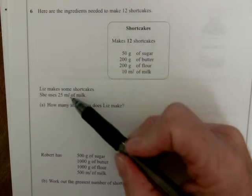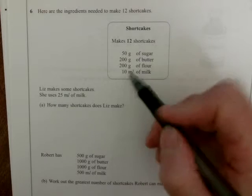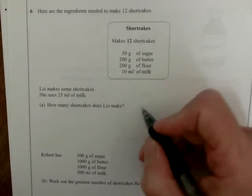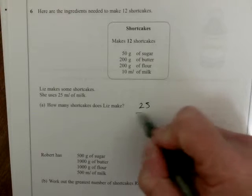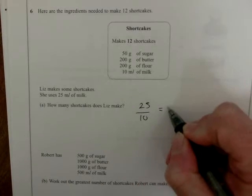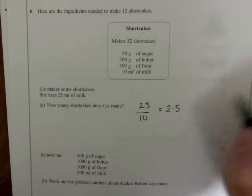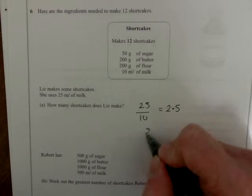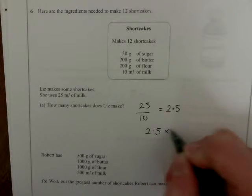So, we've got to look at how many times the 25 mills could make what's required for 12. We only need 10 for 12. So, if we do 25 divided by 10, that tells us she can make 2.5 times as many cakes. So, we've got to do 2.5, and I'll put that down here, 2.5 times 12.